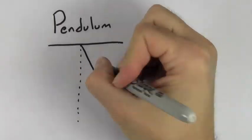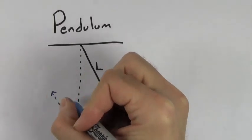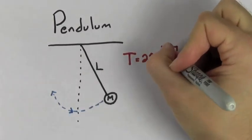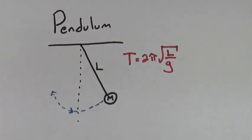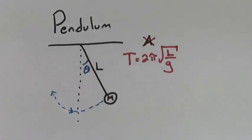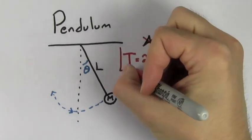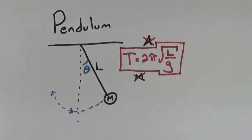For a pendulum, the period depends only on the length of the pendulum and the gravitational acceleration. It also does not depend on the amplitude, but you have to assume that the amplitude is small. Notice also that the period of a pendulum does not depend on the mass hung from the end of the pendulum.